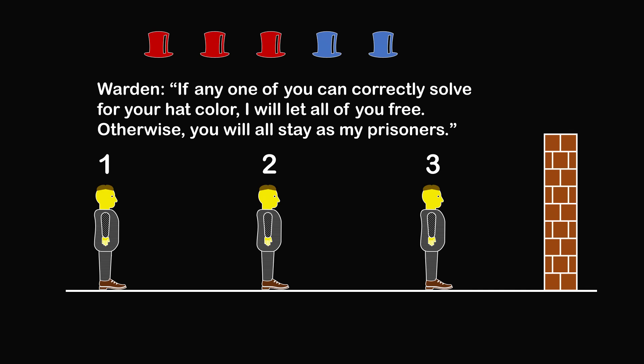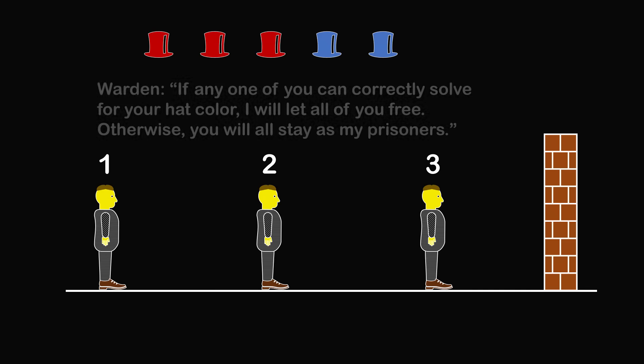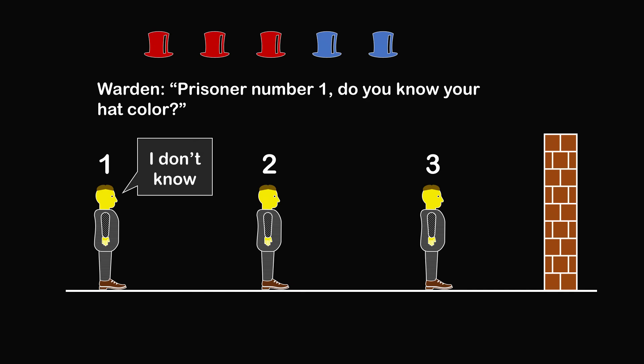The warden then asks each of them in turn. The warden asks, Prisoner 1, do you know your hat color? Prisoner 1 replies, I don't know.